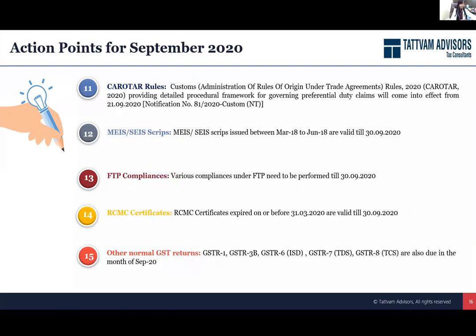There's another change over customs rules — the rules of origin have been changed. New rules have come which are effective from 21st September. These involve documentation work and extra obligations imposed on importers to ensure that whenever they are taking the benefit of any trade agreements, they follow the required procedures. See what the requirements are, what procedures you need to follow, and what documentation has to be taken — because any import happening after 21st September will have to follow the CAROTAR rules.